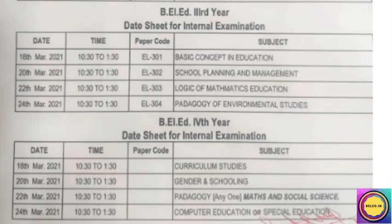Books in Hindi and English are available as per the syllabus. In the third year you will find 4 subjects: Basic Concepts, School Planning, Logic of Mathematics, and Pedagogy. In the final year we understand 2 subjects: Curriculum Studies and Gender and Schooling, plus 2 optional subjects - you can choose Pedagogy Maths or Social Science, and Computer Education or Special Education, making 4 subjects total.